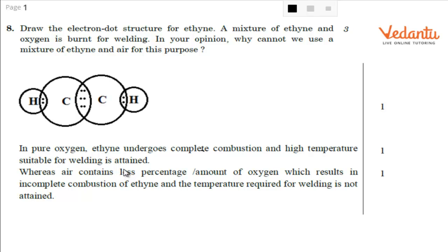Dear students, let's discuss question number 8. Draw the electron dot structure for ethane. A mixture of ethane and oxygen is burned for welding. In your opinion, why cannot we use a mixture of ethane and air for this purpose?